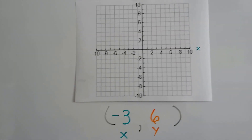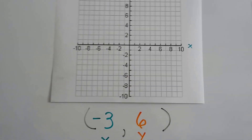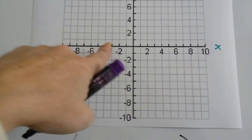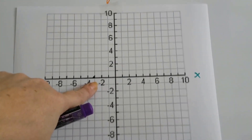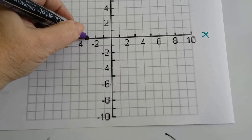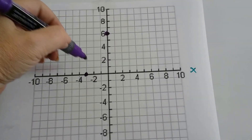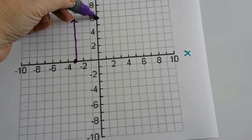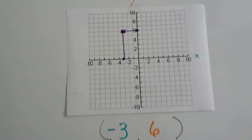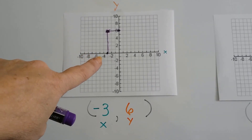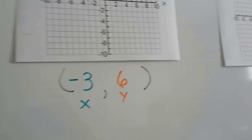Now we've got a negative 3 and a positive 6. The x is always first, so where's negative 3 on the x? It would be right here. So that's negative 3. Now we need to find where 6 is — that's a positive 6, way up here on the y. Where do these two meet? That's our point right there — negative 3, 6. Because we went to negative 3 on the x and 6 on the y and they met.